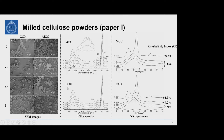Compared with MCC, the COX shows a band around 1744 cm⁻¹ corresponding to carbonyl stretching, due to its carboxyl groups and ester bonds. From the XRD patterns on the right, both original MCC and COX show a crystallinity index (CI) of around 60%. After one hour of milling, MCC becomes very amorphous with no detectable CI, while COX retains a CI of around 44%. After four and eight hours of milling, both MCC and COX are too amorphous to show detectable CI.